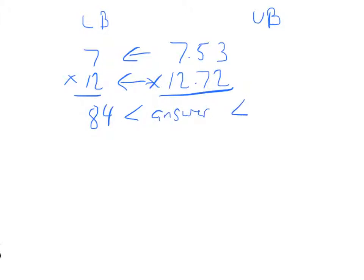And our upper bound, we just round up. We'll round up to 8 and round up to 13. So 80 plus 24 is 104. And so you're saying, still, this isn't very useful. But let me show you what you can do then.